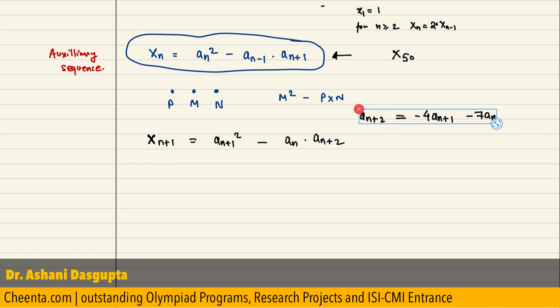Let me paste it here. So, I am going to replace a(n+2) by its value that is given or the expression that is given.